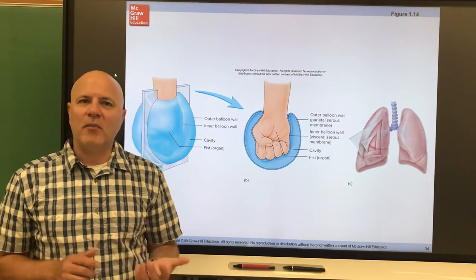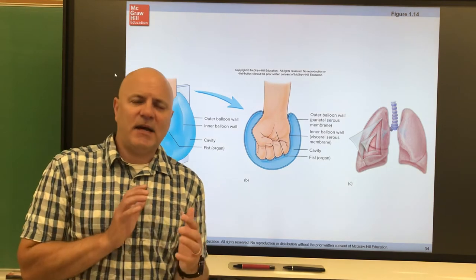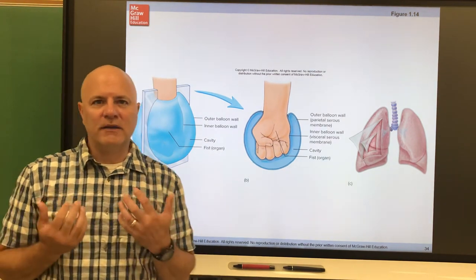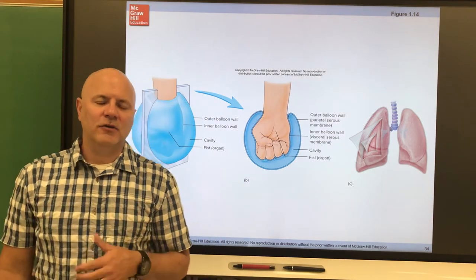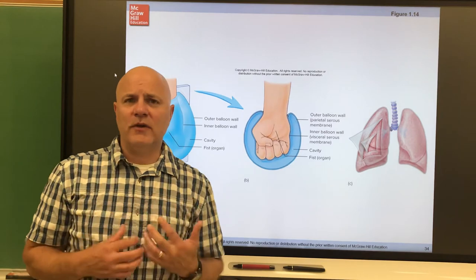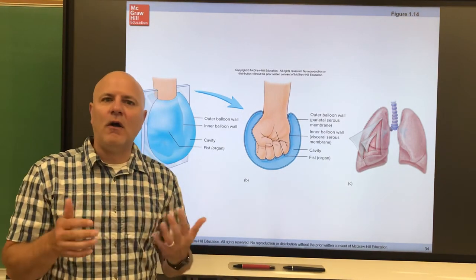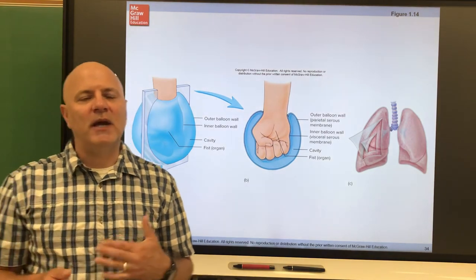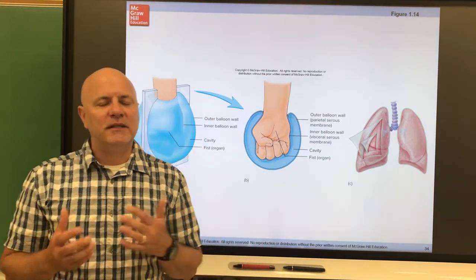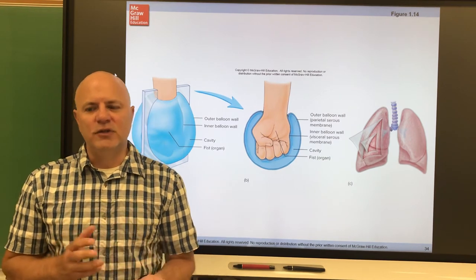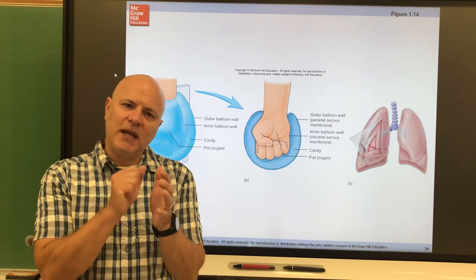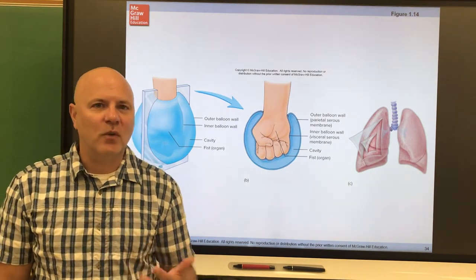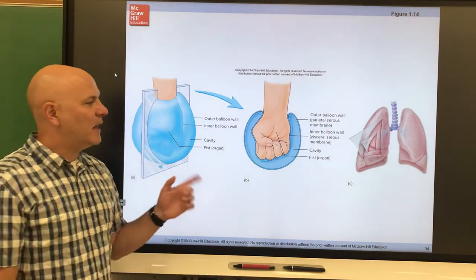The last topic is serous membrane, or serosa — membranes that line body cavities and organs. Because organs move (the heart beats 60–100 times a minute, the lungs inhale and exhale about 12–15 times a minute), organs move against each other within cavities. So body cavities and organs are lined with serous membrane, which produces serous fluid — a lubricant that reduces friction between organs and cavity walls.